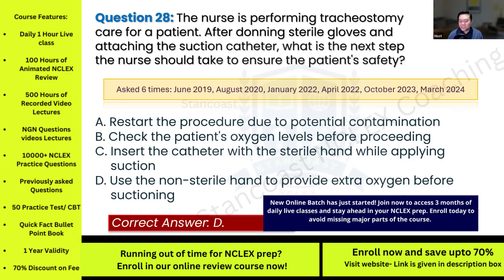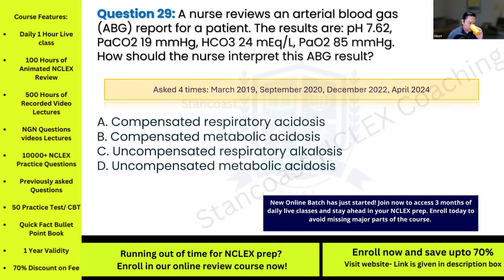Question twenty-nine: A nurse reviews an arterial blood gas report. The results are: pH 7.62, partial pressure of CO2 19 mmHg, bicarbonate level 24 mEq/L, and partial pressure of oxygen 85 mmHg. How should the nurse interpret this ABG result? This has been asked four times. Options: A) compensated respiratory acidosis; B) compensated metabolic acidosis; C) uncompensated respiratory alkalosis; D) uncompensated metabolic acidosis.